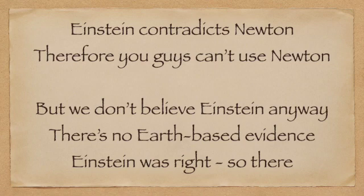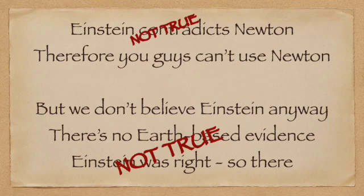There's no Earth-based evidence that Einstein was right, so there. Obviously, these two logical propositions are directly contradictory. It cannot be the case that Einstein's formulation is true and invalidates Newtonian theory, and is simultaneously false and doesn't need to be considered by the Flerfs. But even leaving that fundamental problem aside, there is an even more fundamental issue. Both of these statements are factually incorrect.